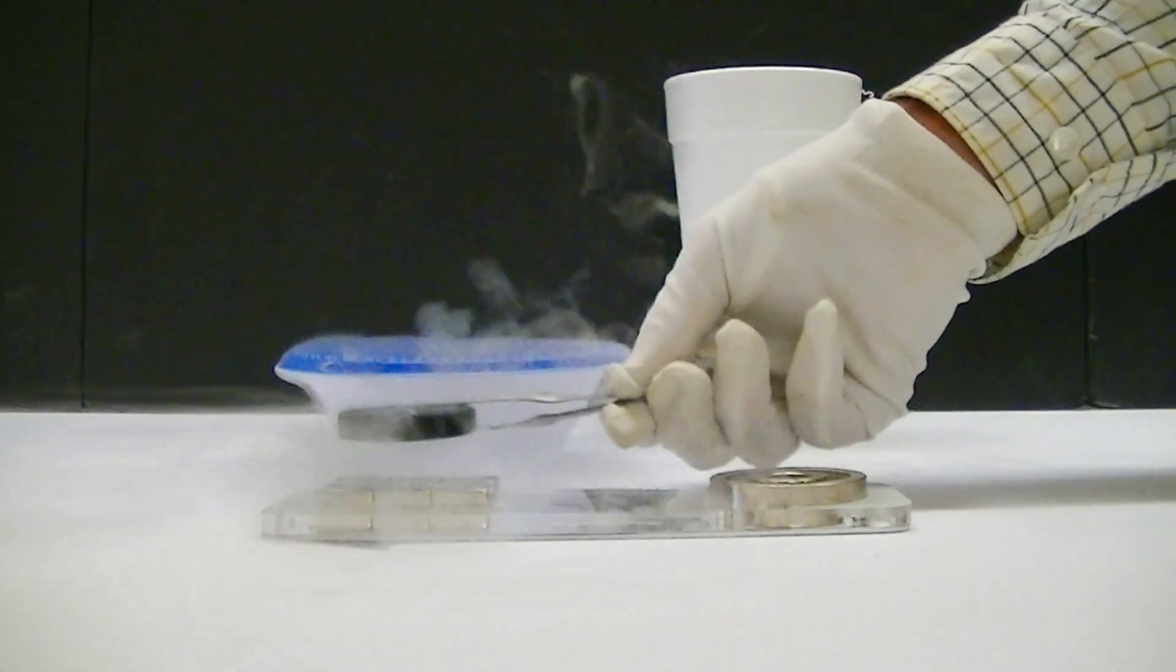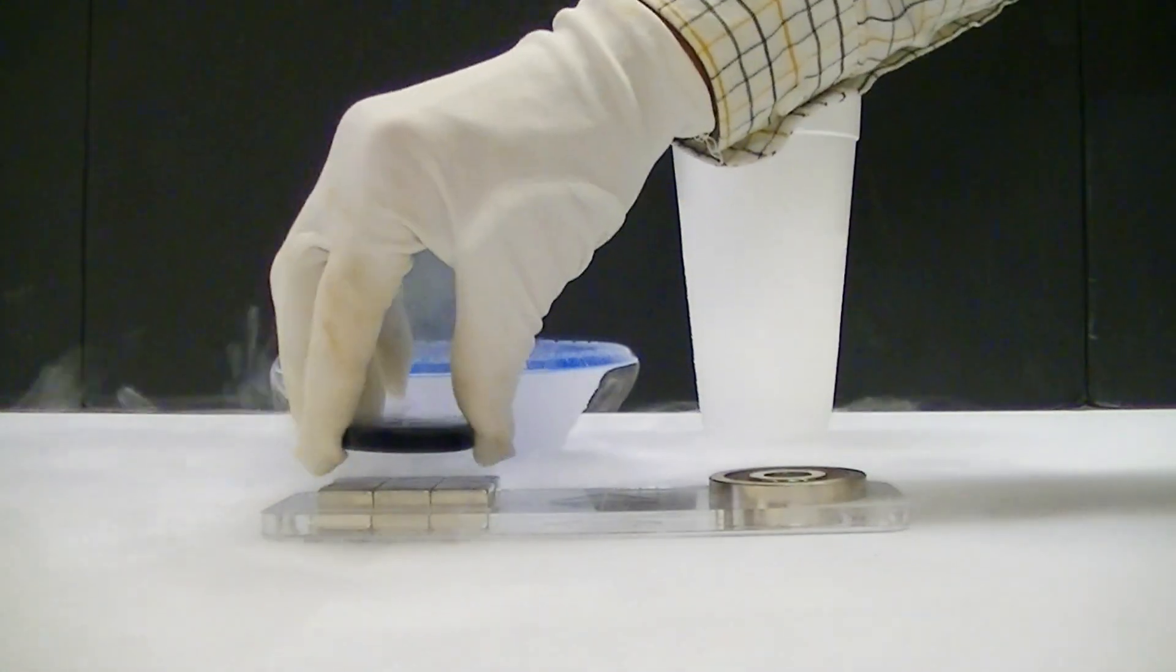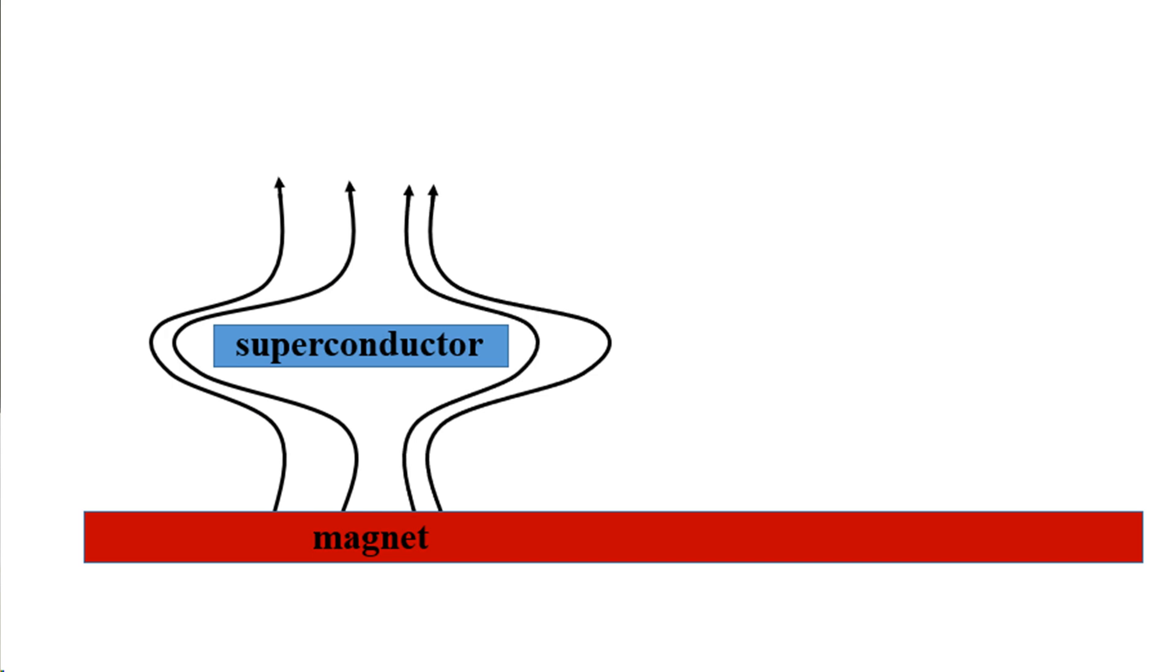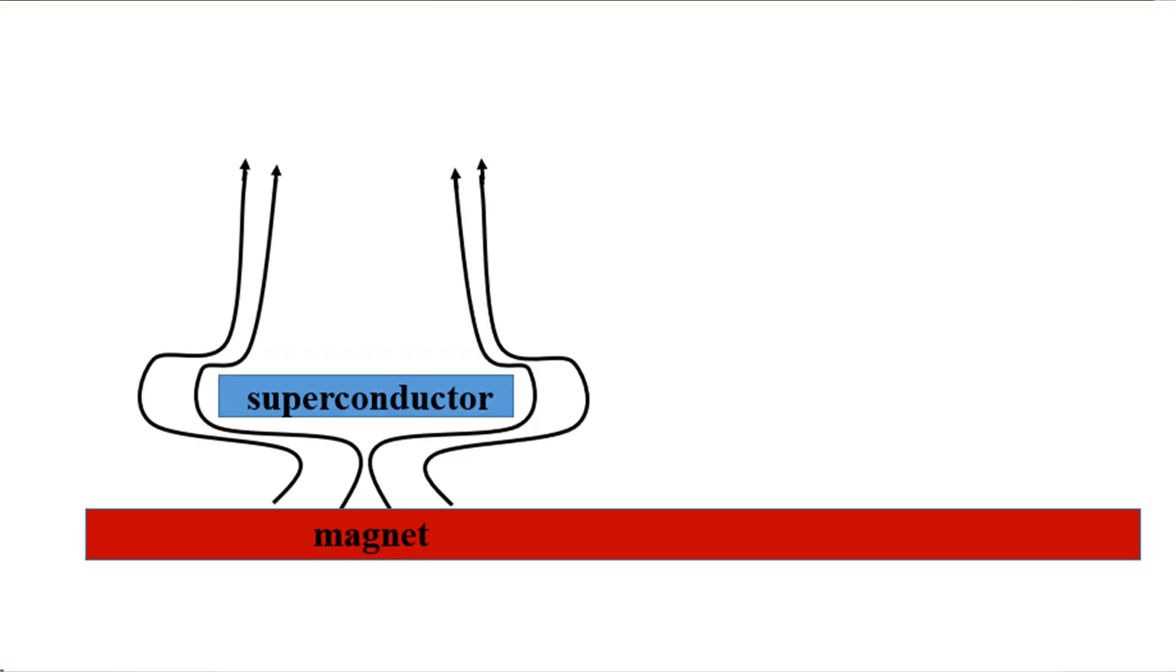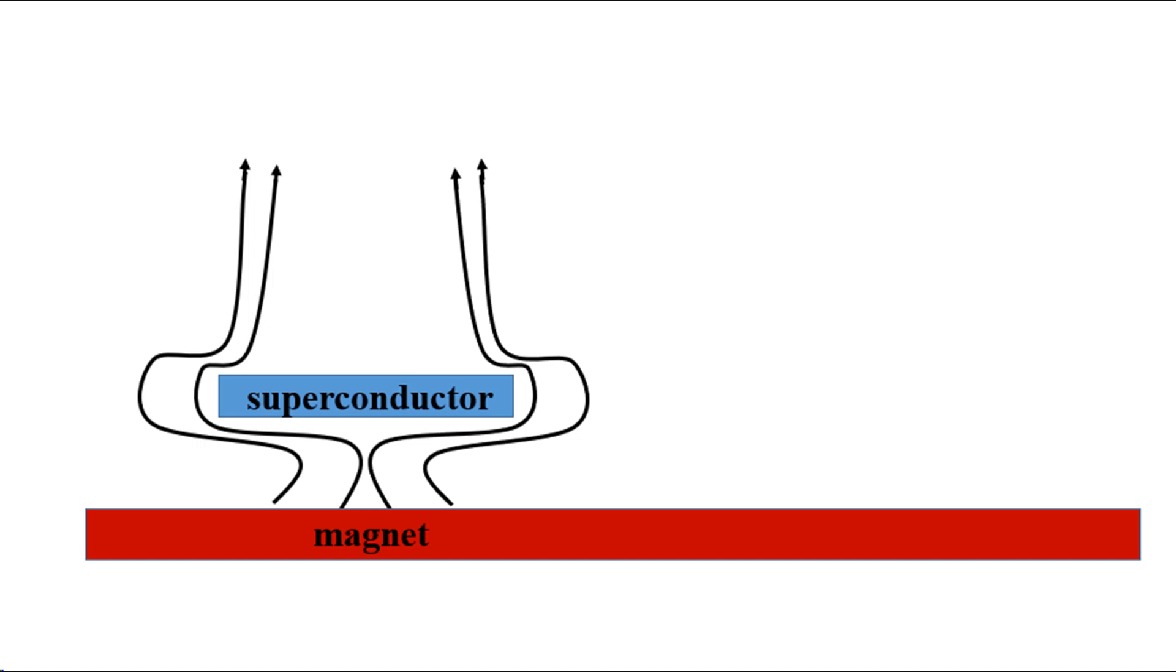The Meissner effect also allows us to do the opposite: levitate a superconductor above a magnetic field. A superconductor placed above a magnet falls because of gravity and the superconductor expels the magnetic field from the magnet below. However, the superconductor is unable to fall onto the magnet and touch it because doing so would require the magnetic field to penetrate the superconductor. Thus, the superconductor levitates above the magnet where the gravitational and magnetic forces balance.